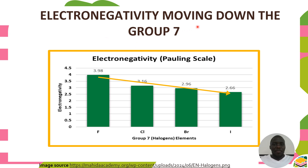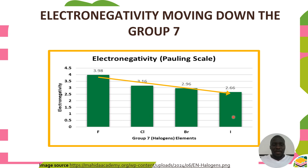The decrease in electronegativity going down the group can be illustrated using Group 7 elements. Looking at the bar graph for fluorine, chlorine, bromine, and iodine, the value for fluorine is the highest, meaning fluorine can attract the shared electrons most strongly compared with iodine. This is due to the number of energy levels: going down, protons increase and nuclear charge increases, but that effect is reduced by the increasing number of energy levels, as the inner electrons shield the attraction to the outermost electron.